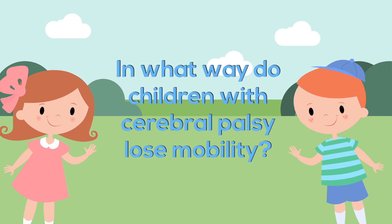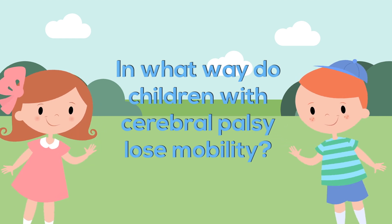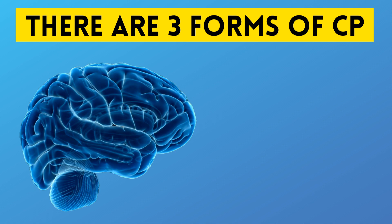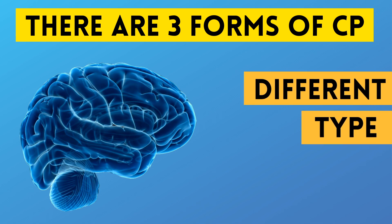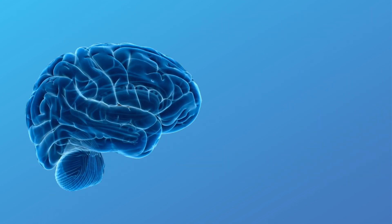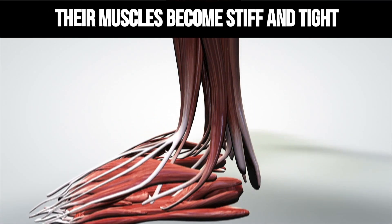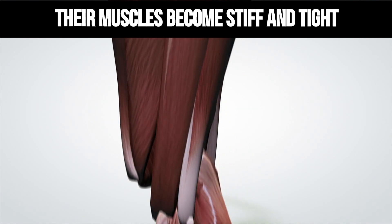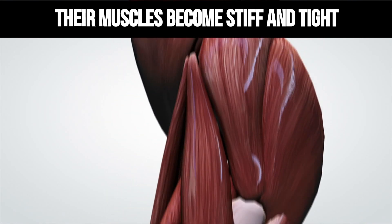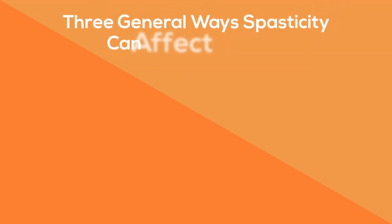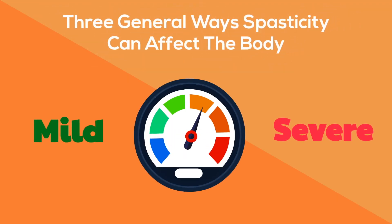In what way do children with cerebral palsy lose mobility? There are actually three different forms of cerebral palsy, and each one affects a different type of movement. The first and most common type is called spastic cerebral palsy. Children with spastic CP are not able to move their bodies fluidly. Their muscles become stiff and tight, which makes it difficult for them to use their arms and legs to do everyday tasks. There are three general ways spasticity can affect the body, ranging from mild to severe.